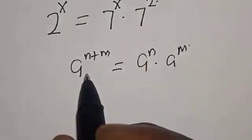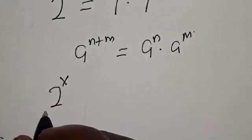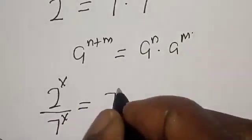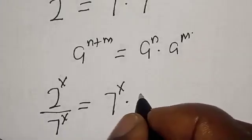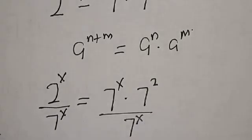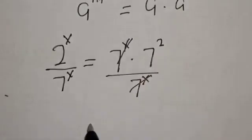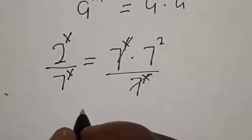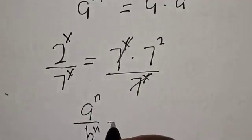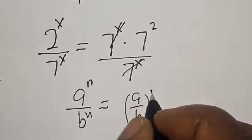Let's divide both sides by 7 raised to power s. We have 2 raised to power s divided by 7 raised to power s is equal to 7 raised to power s multiplied by 7 squared, divided by 7 raised to power s. This one will cancel this. Now, 2 raised to power s over 7 raised to power s — using the rule a raised to power n over b raised to power n equals a over b raised to power n.